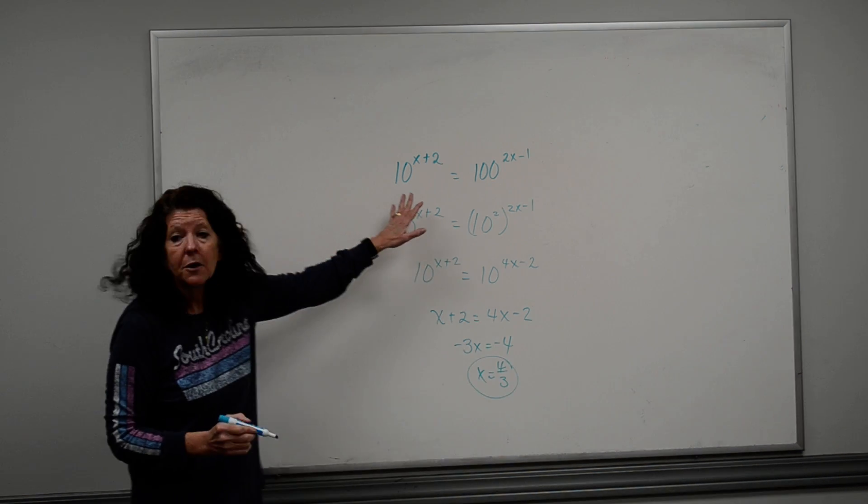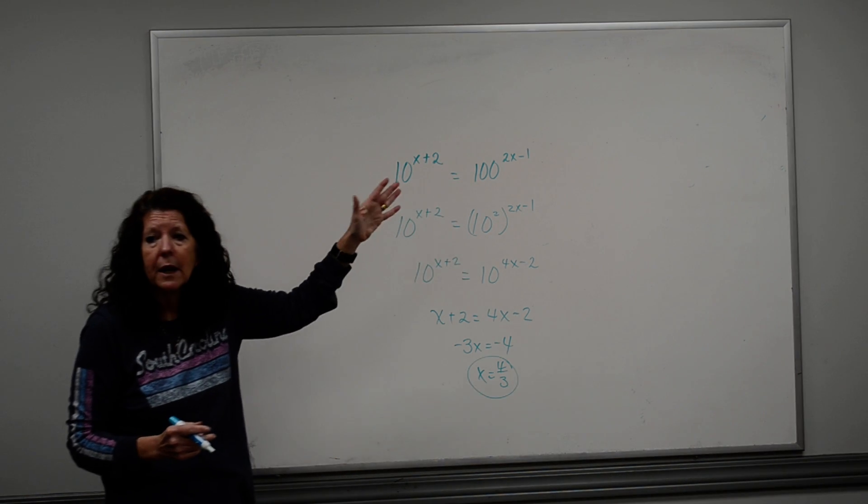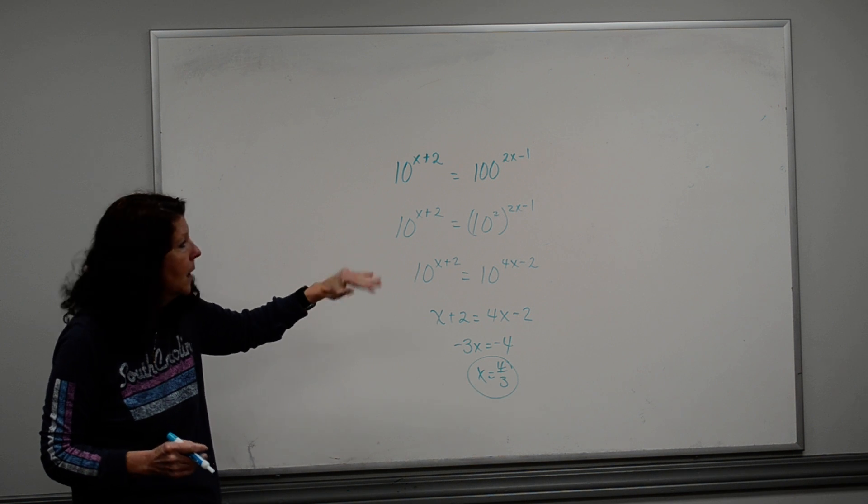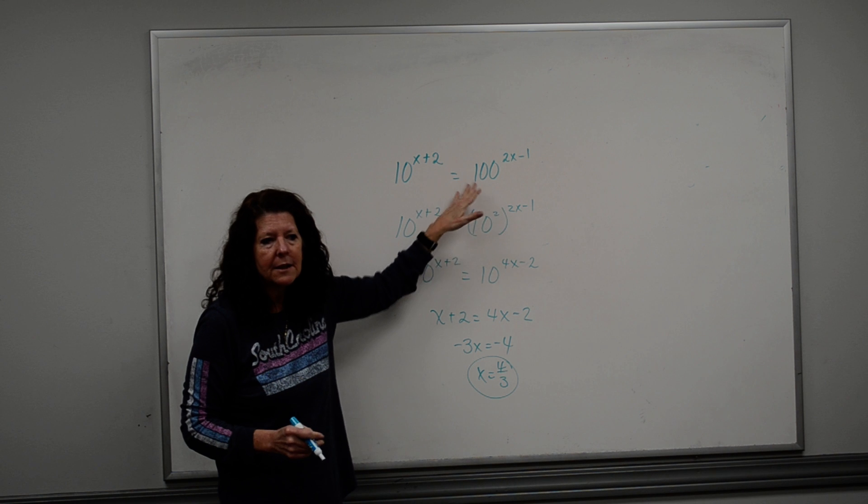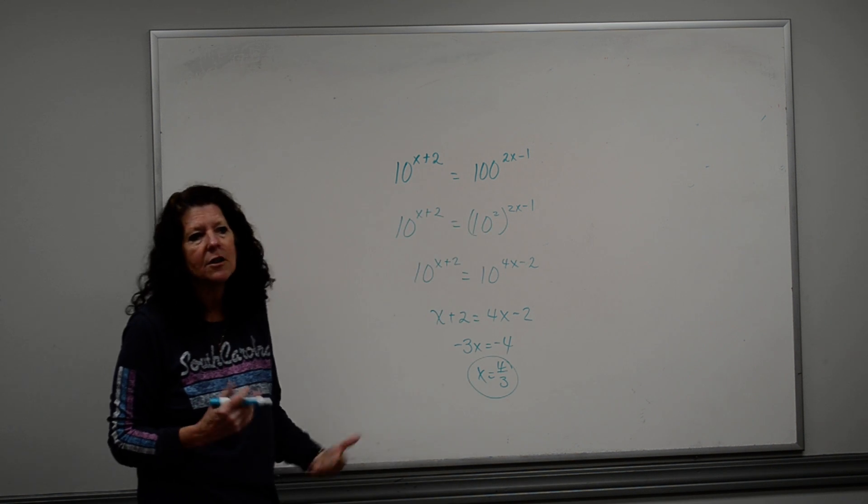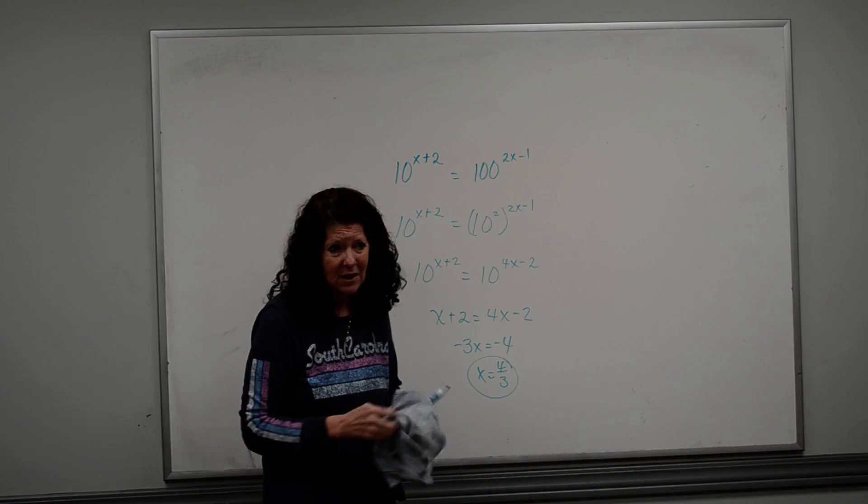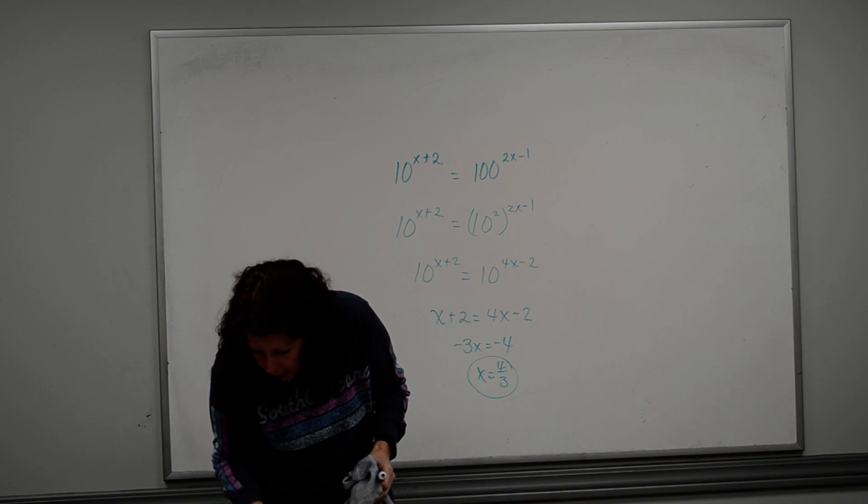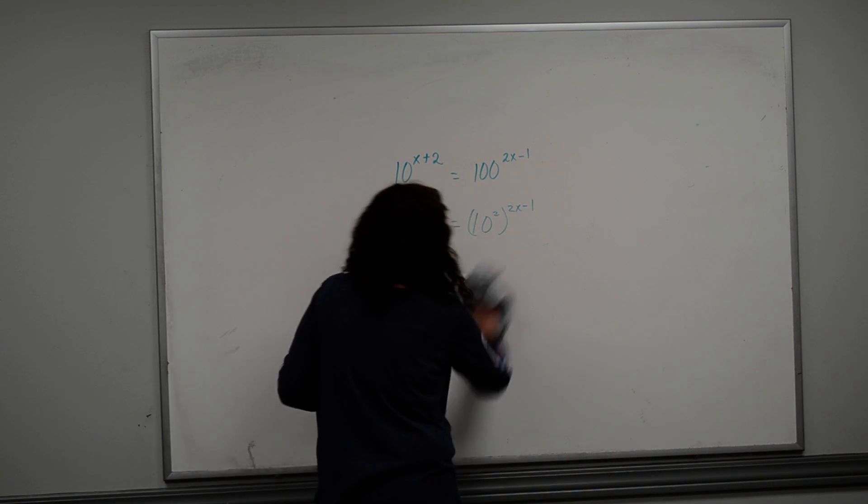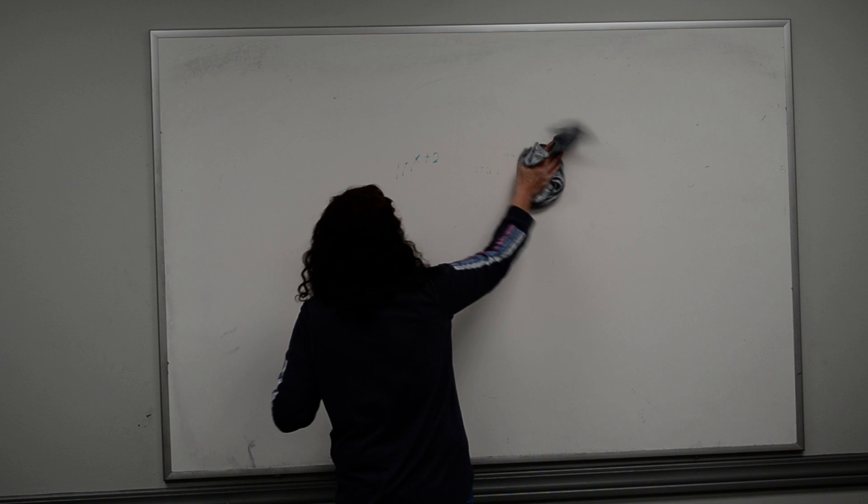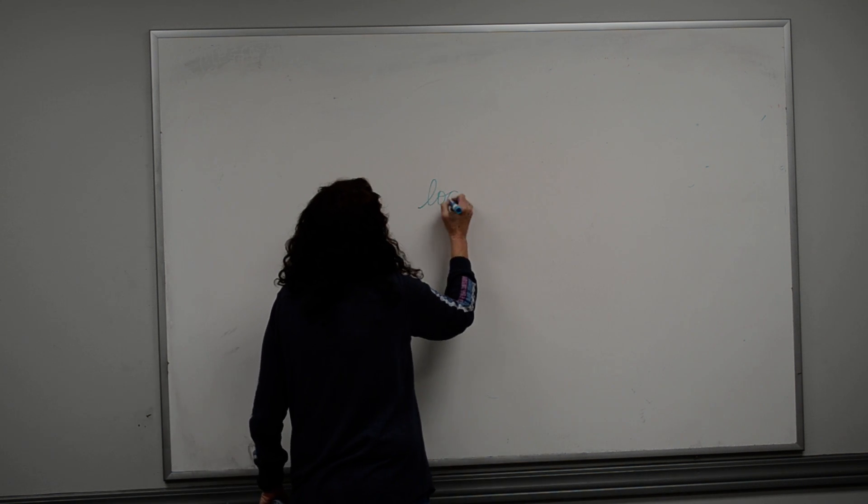Now, you can do this the other way. You can take the log of both sides and work the way through the same way you did the last problem. But, I don't know why you would want to do that. If you can make the base numbers the same, always check to make sure that the base numbers can be made the same. Does that make sense? All right. Then, the only other thing that they have in this section, so basically, you're going to get time to do most of your work today.